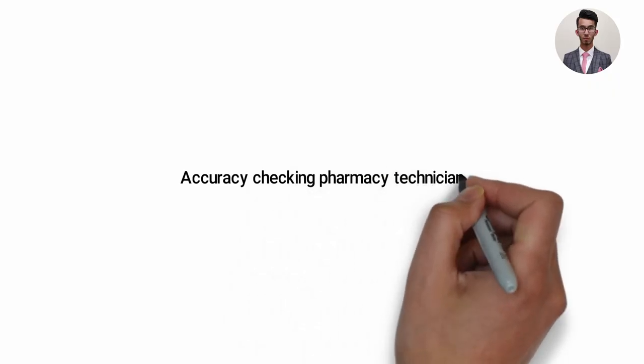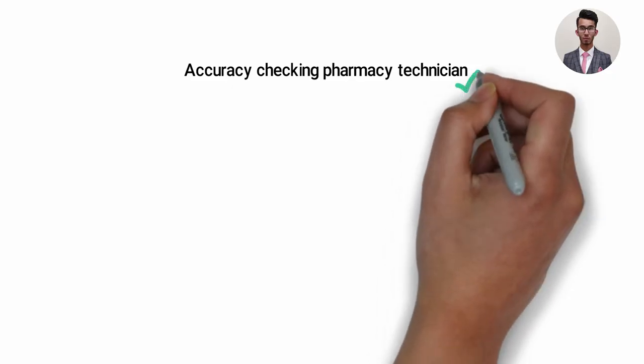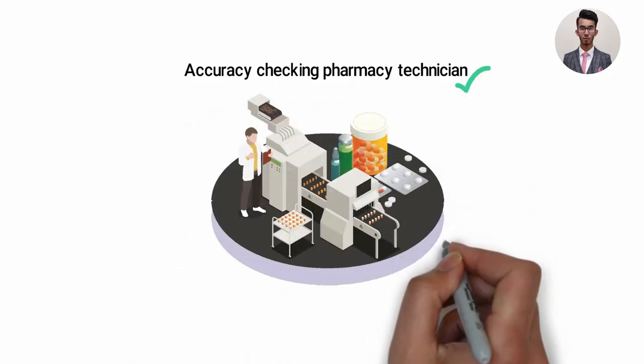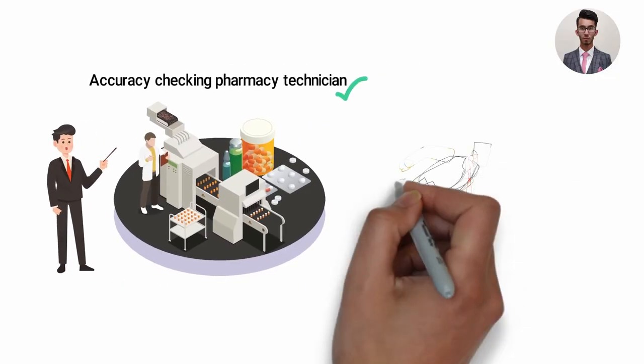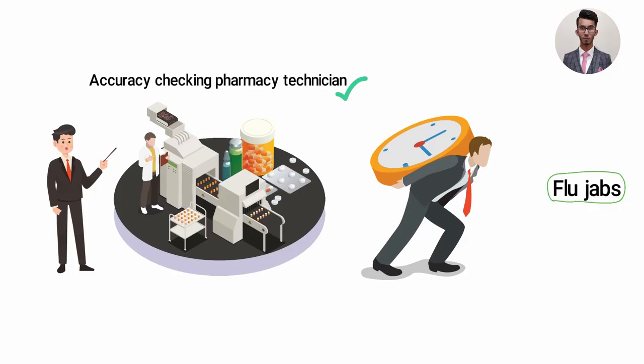Then we have the accuracy checking pharmacy technicians. They do everything a technician does, along with final checking drugs before they are given out to patients. This takes some burden off the pharmacist's shoulders, allowing them to give other services like flu jabs.